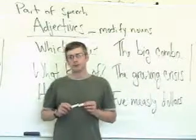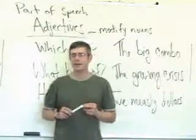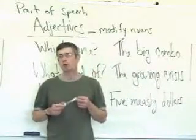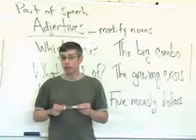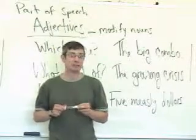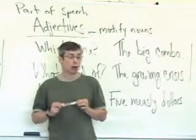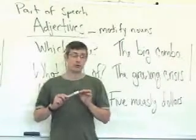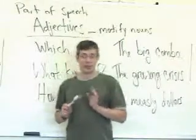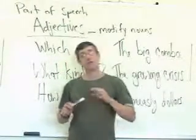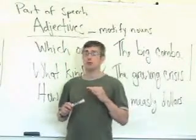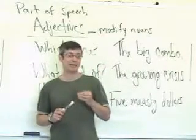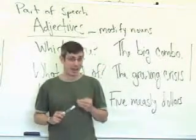Words in English are divided into eight parts of speech. Every word in an English sentence has one and only one part of speech. So to understand what's going on in a sentence, you need to be able to identify what part of speech every word in it has.